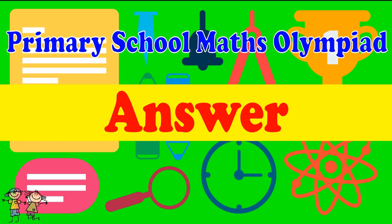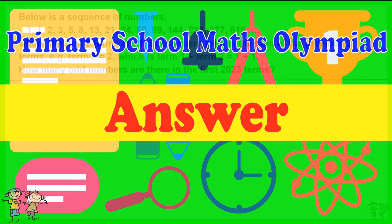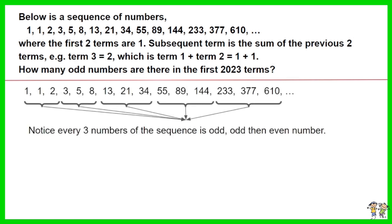Here is the recommended answer. Notice every three numbers of the sequence is odd, odd then even number.